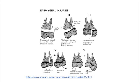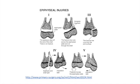In the second type, the line of separation runs through part of the epiphyseal plate and then out through the diaphysis shaft, where it produces a characteristic triangular fragment. This is a common epiphyseal injury and it happens particularly at the distal end of the radius. The third type of fracture extends from the joint surface into the epiphyseal line and then through part of the diaphysis.